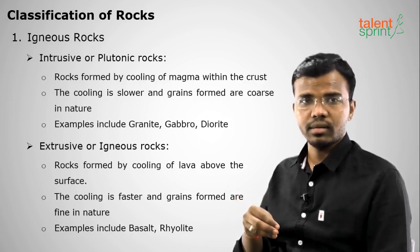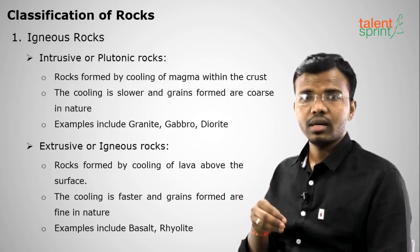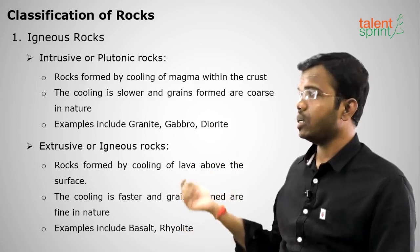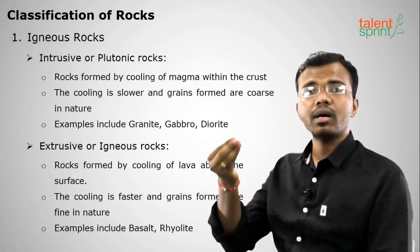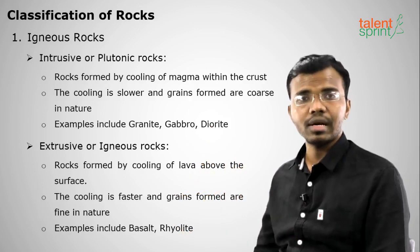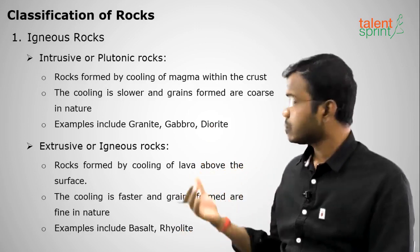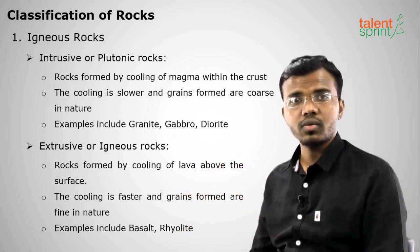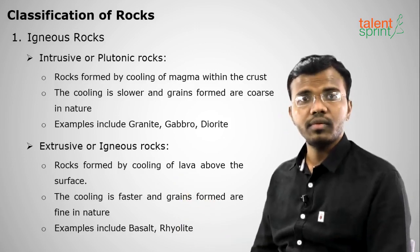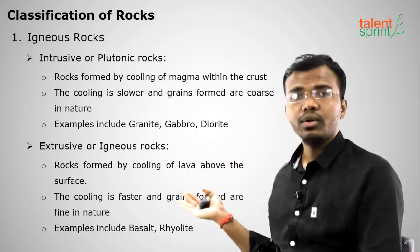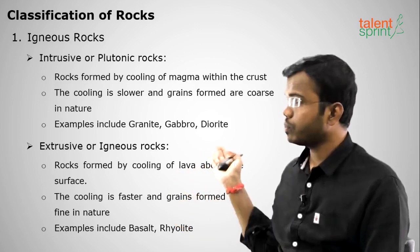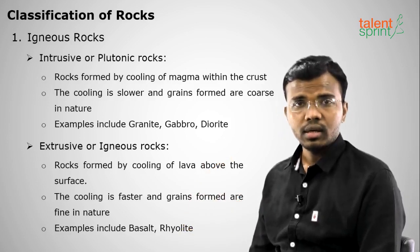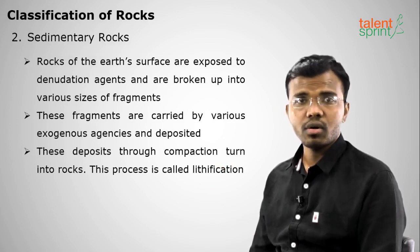Intrusive or plutonic rocks form when magma cools inside the Earth. When magma comes out of the Earth it becomes lava, and when lava cools outside it forms extrusive or igneous rocks. The cooling rate is faster outside, so the grains formed are very small. Examples: intrusive rocks — granite; extrusive rocks — basalt.